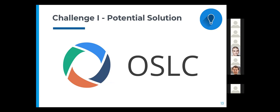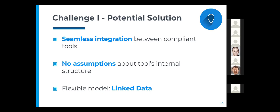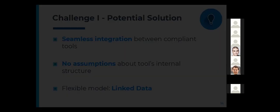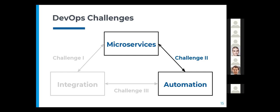A potential solution to this challenge, of course, could be OSLC. OSLC allows for seamless integration between tools that are compliant with its specifications because it makes no assumptions about the internal structure of the tools it is modeling. It only focuses on properties relevant for interoperability, not interfering with other possible features a developer might want to implement. Such flexibility is possible thanks to its linked data-based models. OSLC solves the integration challenge.